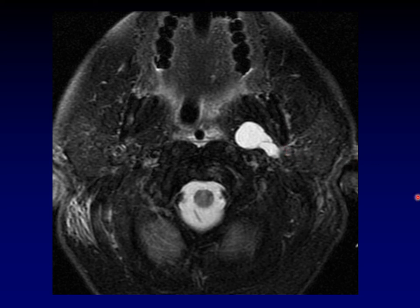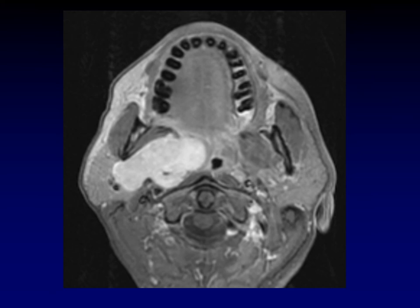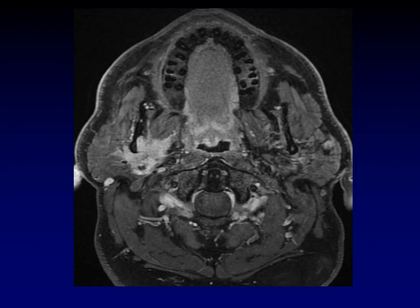This is a mass extending from the deep lobe through that stylomandibular tunnel. Here's another example where you don't even need to see the displacement of the parapharyngeal fat, because the relationship to the styloid — indenting the posterior surface of this uniformly enhancing mass — convinces you that this is a pre-styloid mass. It's another pleomorphic adenoma. Sadly, not everything in the pre-styloid space is benign. This happens to be an adenoid cystic carcinoma, which you can see displacing the parapharyngeal fat predominantly medially while also traveling along the mandibular nerve into the mandibular foramen. Adenoid cystic carcinoma is, of course, famous for perineural spread.